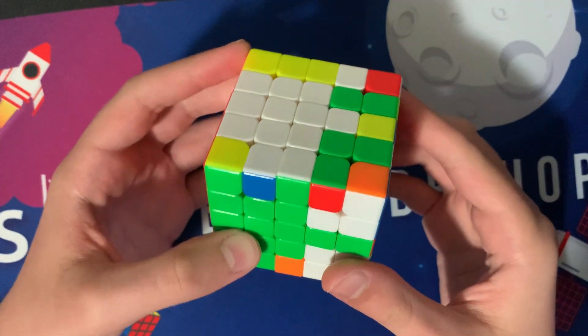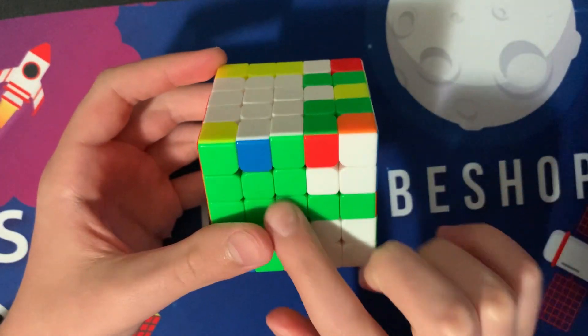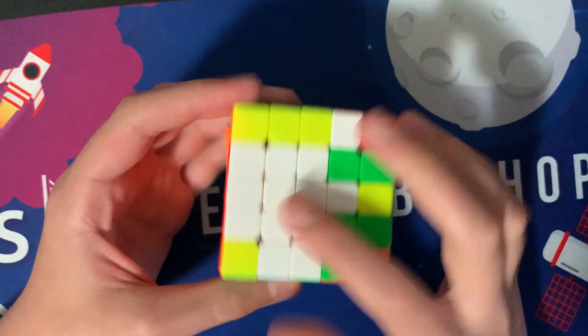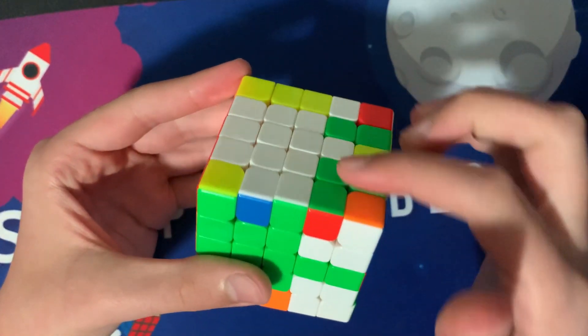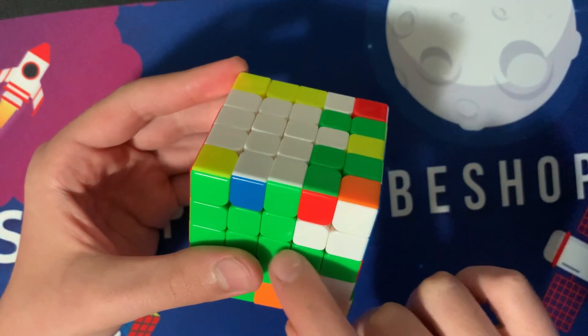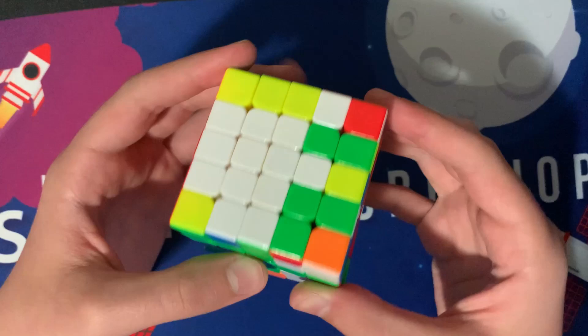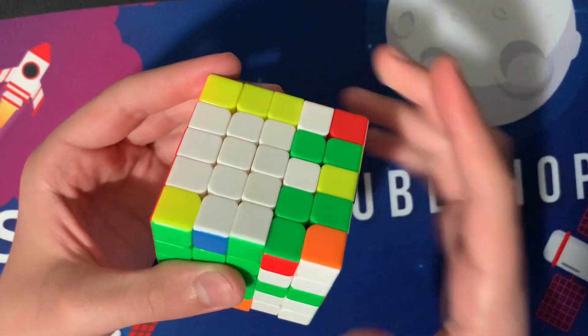The next case looks like this. You have the two by three and two by three up here. And you have like one bar that's not solved. And then this matches. So the way you solve this is just with triple sexy and the R moves are wide.